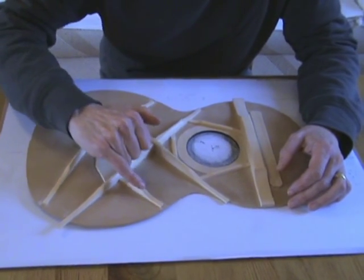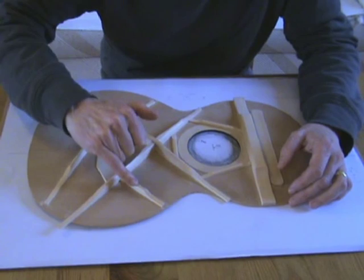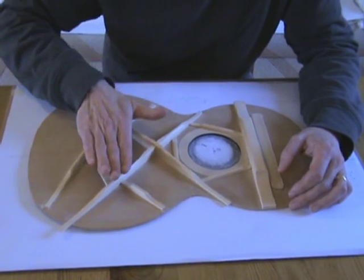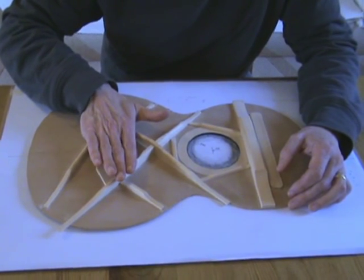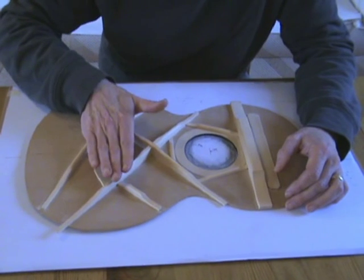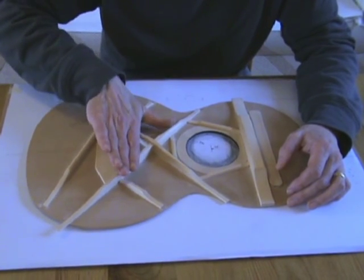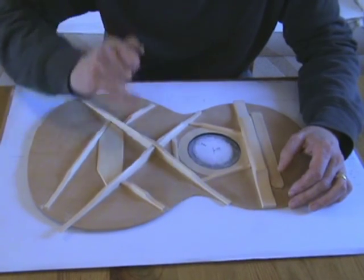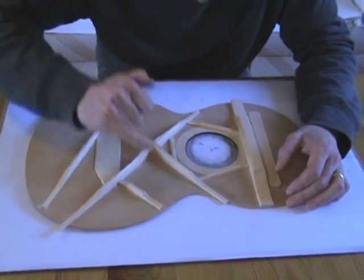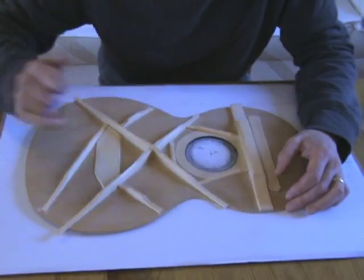And a similar thing with these two braces here. They're supporting the bridge right at the very tip, stopping the bridge from tipping forward too much, but also transmitting vibrations across this portion of the soundboard.